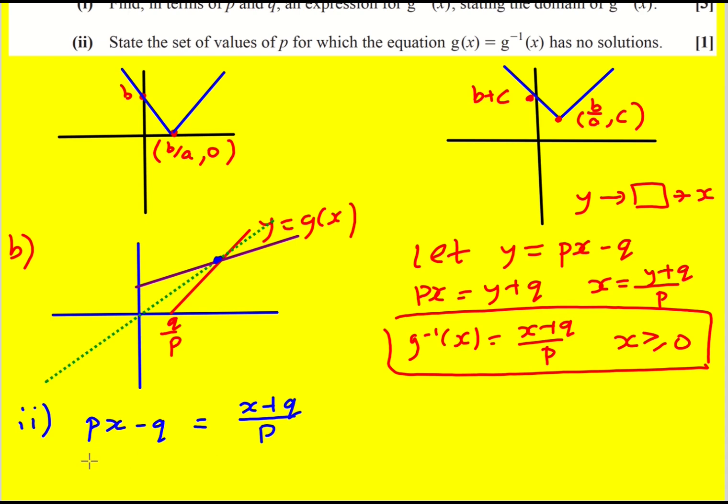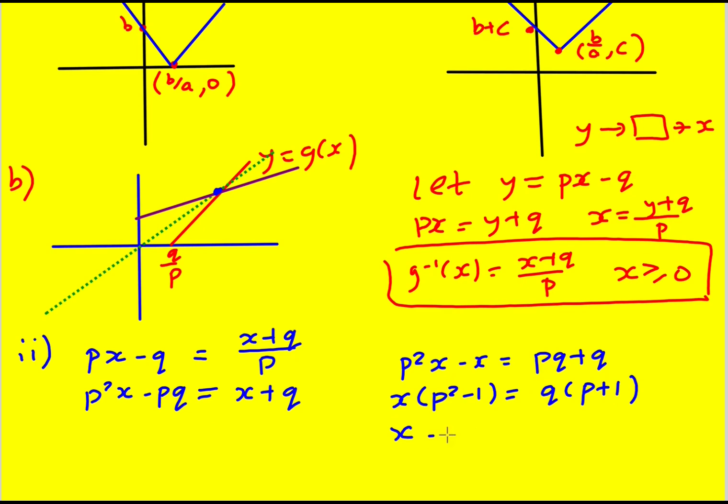I could get this times through by p. p²x - pq equals x + q. And then to make x the subject I'm going to get p²x - x equals pq + q. That means that x times (p² - 1) is equal to q(p + 1). So x is going to be q(p + 1)/(p² - 1) but I could write that as (p + 1)(p - 1) and cancel it down.